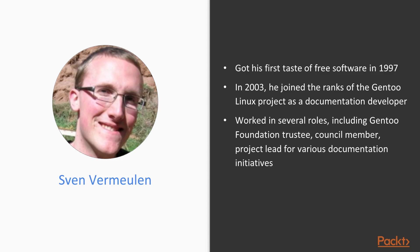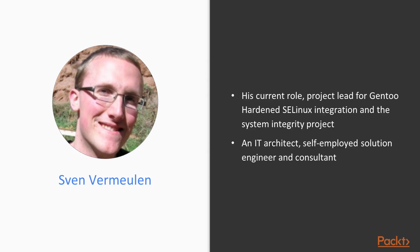Sven Vermeulen is a long-term contributor to various free software projects and the author of various online guides and resources. He got his first taste of free software in 1997 and never looked back. In 2003, he joined the ranks of the Gentoo Linux Project as a documentation developer and has since worked in several roles, including Gentoo Foundation trustee, council member, and project lead for various documentation initiatives and project lead for the Gentoo-hardened SE Linux integration and the System Integrity Project.